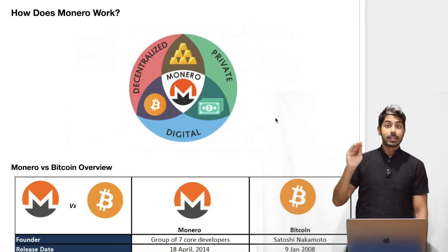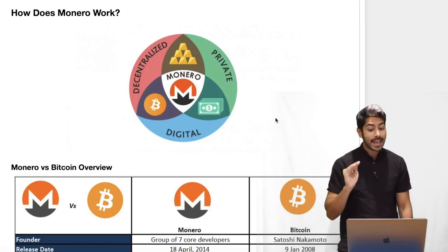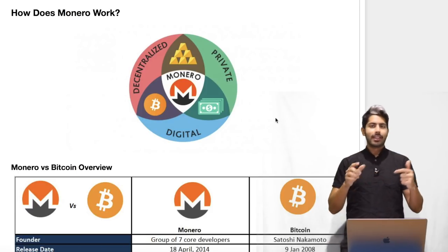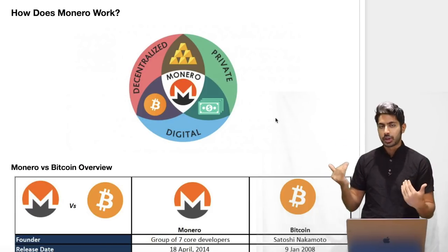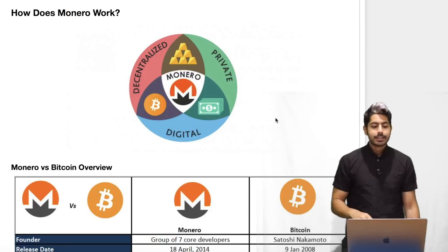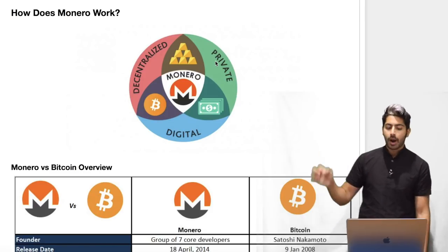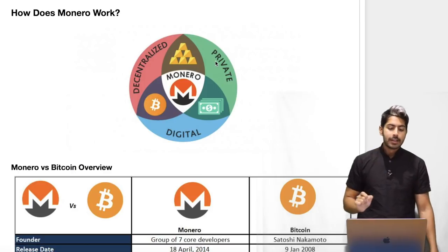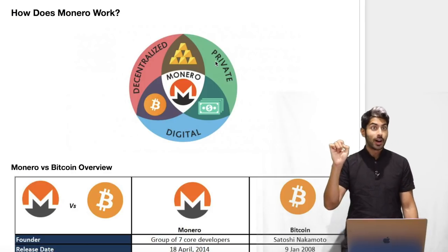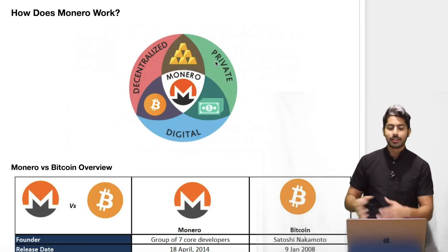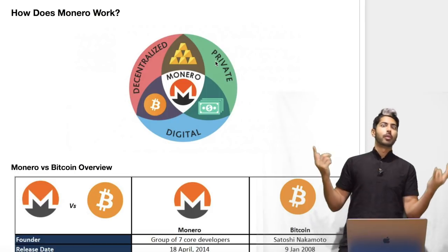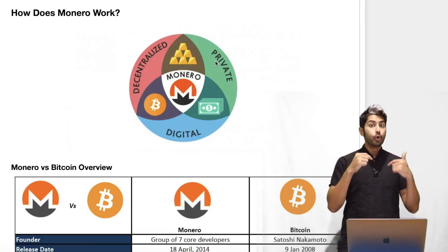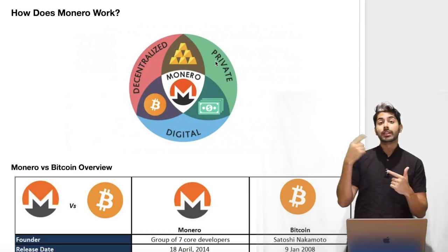Monero is the currency I'm going to talk about today. I have this image of three different features that I thought was the best high-level description of Monero: decentralized, private, and digital. Monero is all three of these things. It's decentralized because no one controls it, digital because you can run it over the internet, and private because no one can tell who you are when you send a transaction.